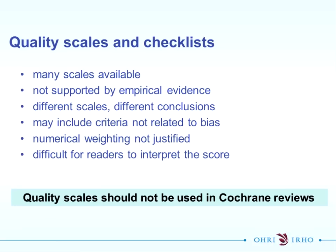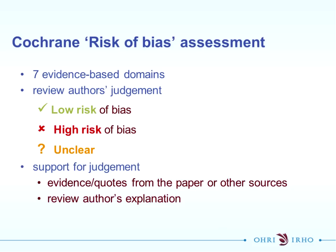Another note about quality scales and checklists: Agnes Deschamps published a paper last year in Annals looking at how quality in randomised control trials is assessed and identified over 26 different ways of assessing risk of bias or quality in primary studies. Within Cochrane reviews, we suggest that quality scales should not be used. There is empirical evidence suggesting that results of using scales and aggregate scores may be misleading, although that makes it more challenging to assess which studies are higher risk of bias compared to others.